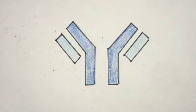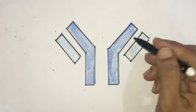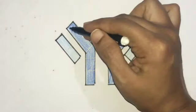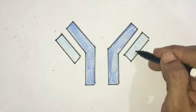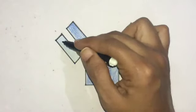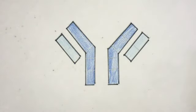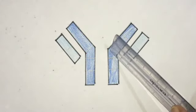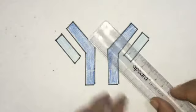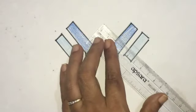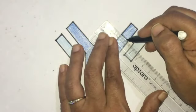In this video I'll be explaining the structure of an antibody. As you can see, there is a Y-shaped structure, and this whole structure is divided into five parts.